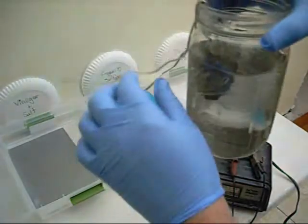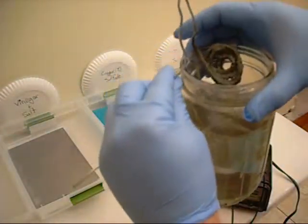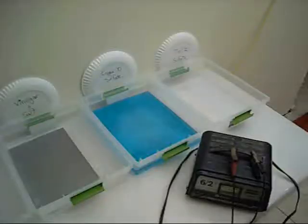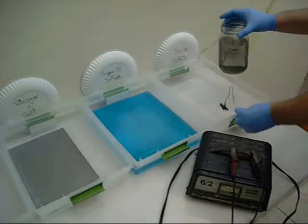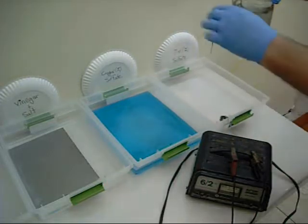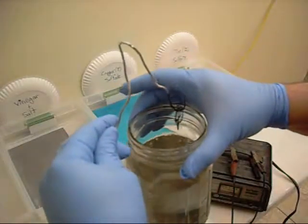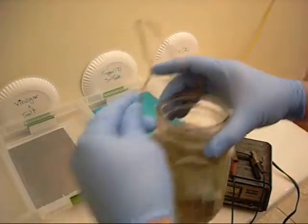After about an hour, this is what we get. It's got a slightly gray color in the solution. And you know that the process is complete once the tin starts collecting on that anode. We've got a lot of precipitate that is sitting along the bottom of the mason jar.